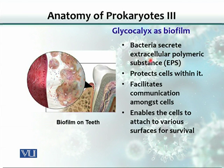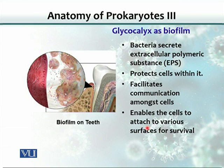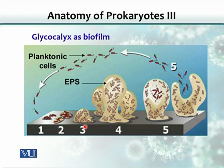When making biofilm, bacteria also secrete extracellular polymeric substances (EPS), which protect the cells. The cells make a colony and are all protected by this biofilm. It is very difficult to remove a bacterium that has formed a biofilm in the body after infection — such infections are very difficult to treat. The glycocalyx helps bacteria attach to various surfaces for survival. This picture shows a biofilm on teeth.